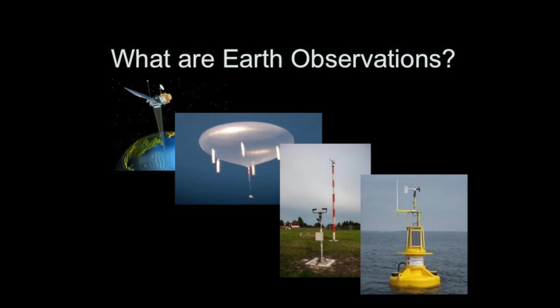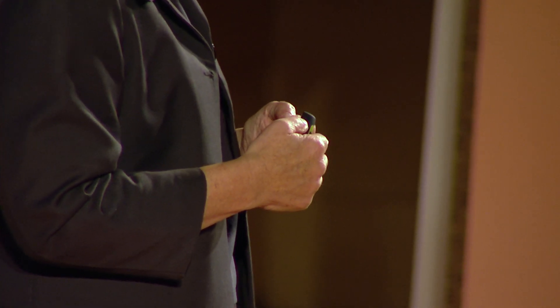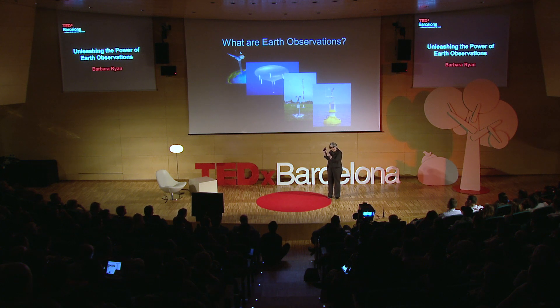We can assess those resources with Earth observations. Earth observations are any measurements of the Earth taken from satellites, airborne sensors, terrestrial or land-based sensors, or marine or sea-based sensors. Governments around the world are putting a tremendous amount of money into the networks that take these Earth observations and the satellites on orbit in space. And yet we are sub-optimizing this investment because the data is often not released broadly and freely to the citizens of the world.